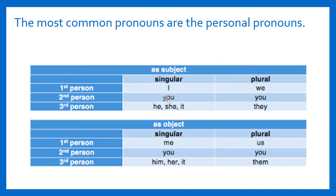The most common pronouns are the personal pronouns. They are used to represent people. They can show the first person — the speaker — second person — the person being spoken to — or third person — the person being spoken about. Like nouns, personal pronouns can function as either the subject of a verb or the object of a verb or preposition.